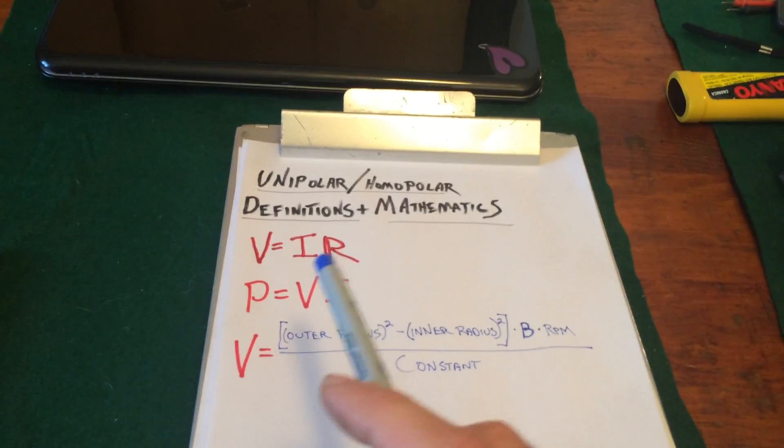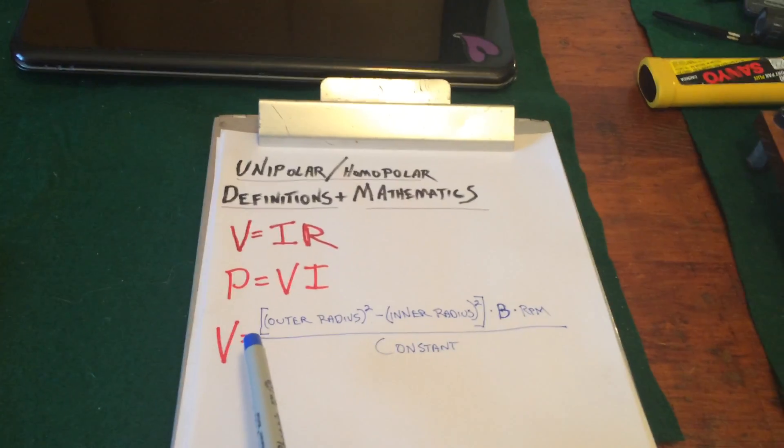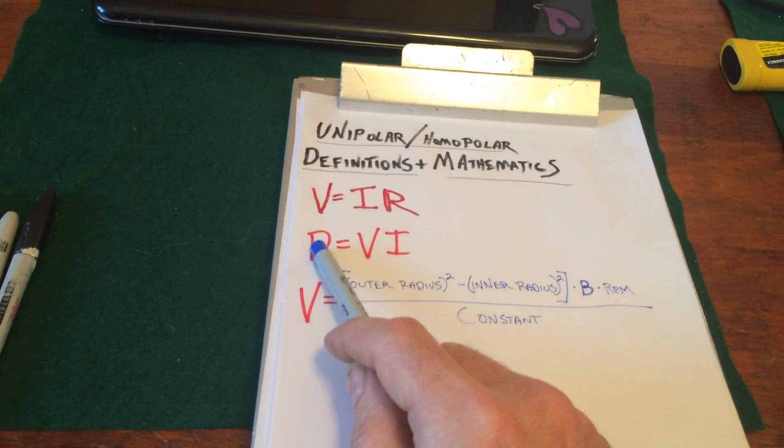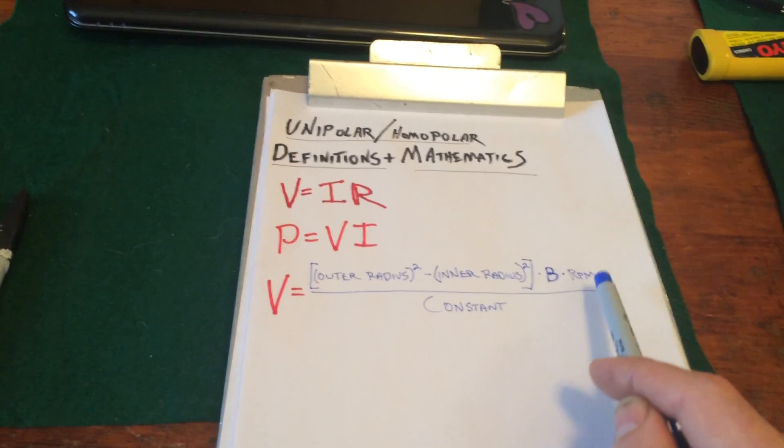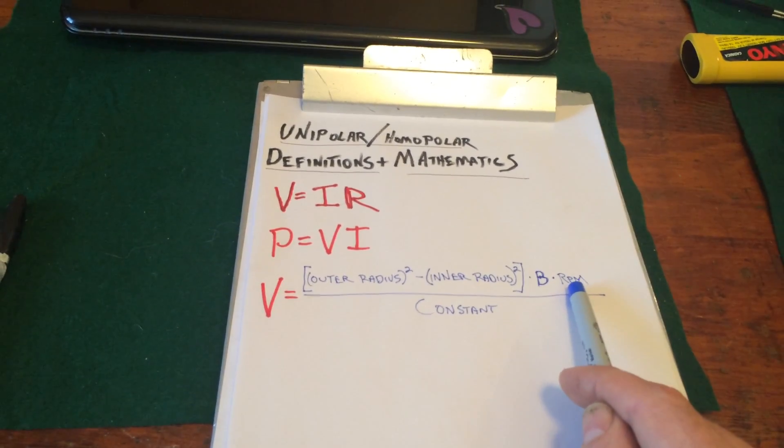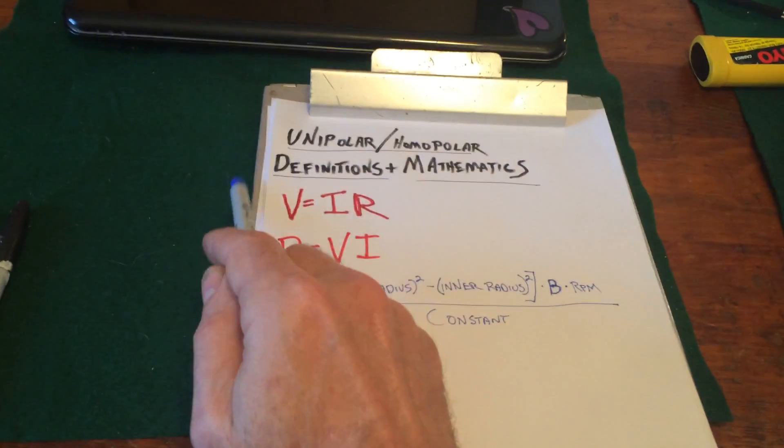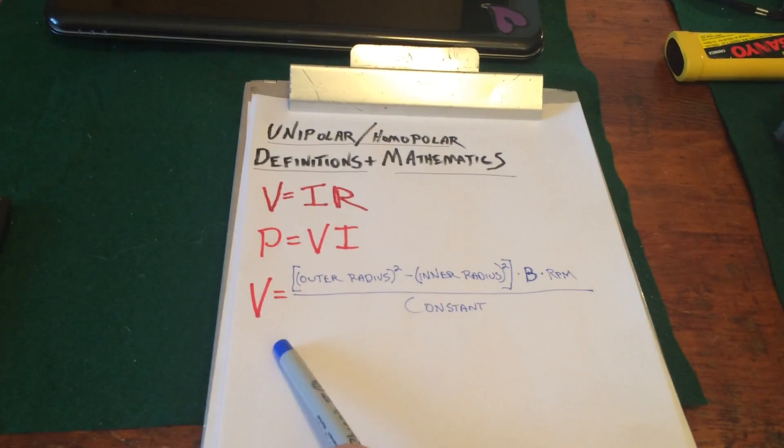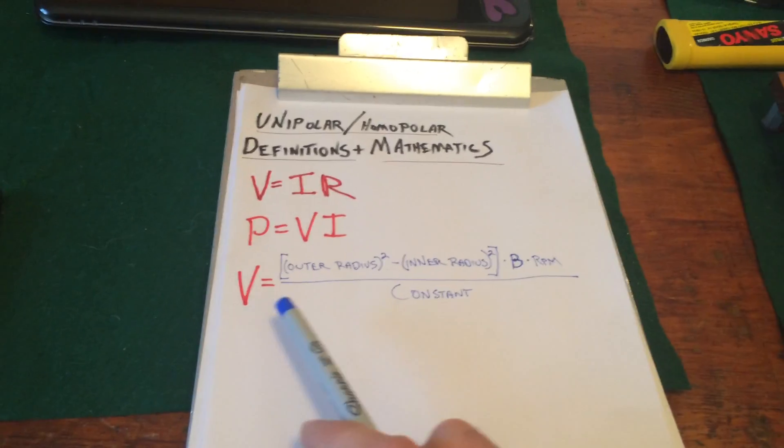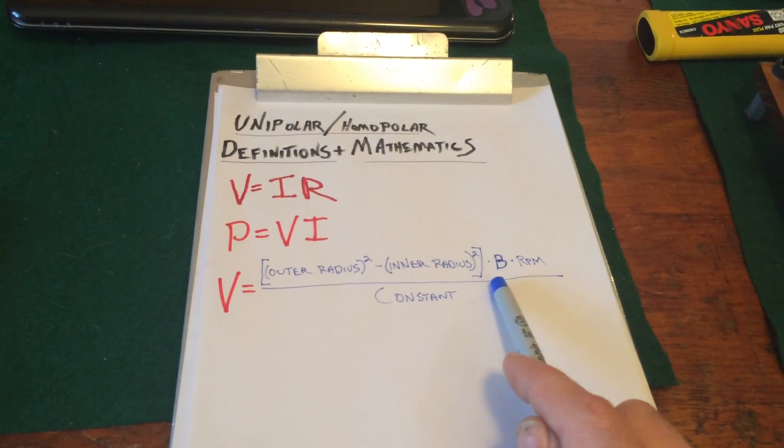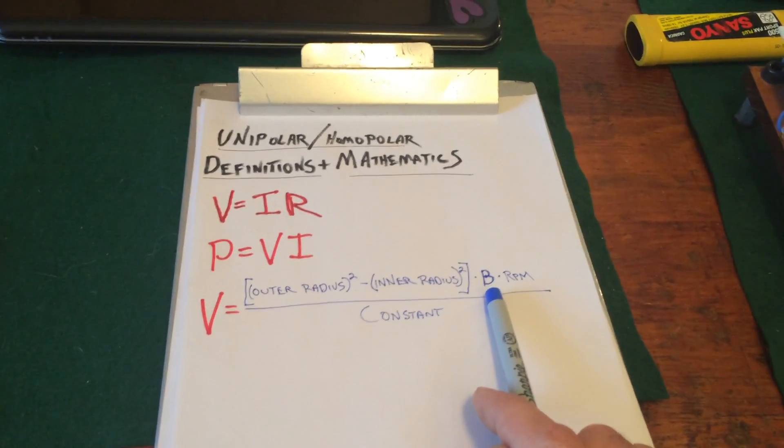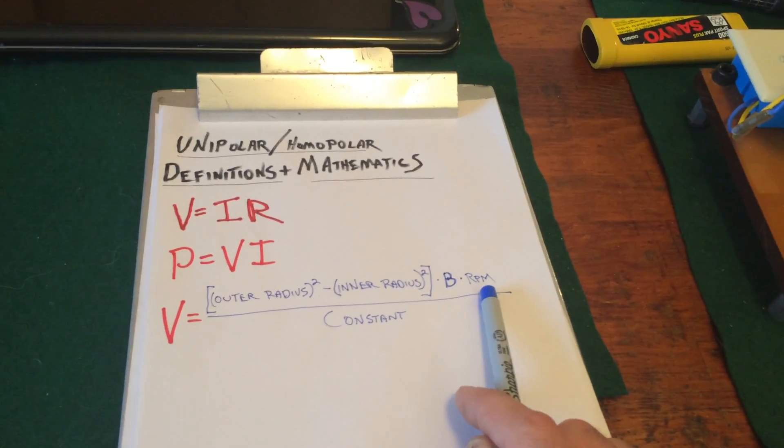So I hope this helps explain the power in the system and that the power becomes a function of the square of the RPM, and the voltage is a function of the square of the radius, but only linearly related to the field strength, and linearly related to the RPM.